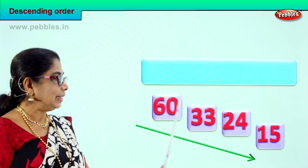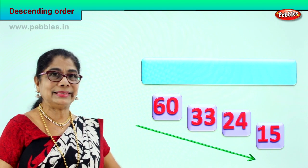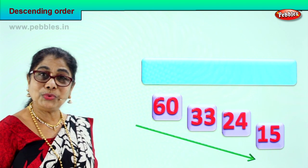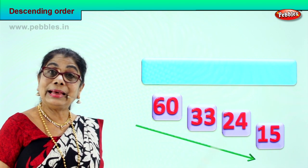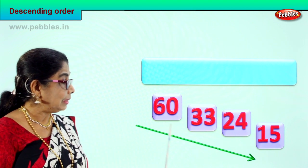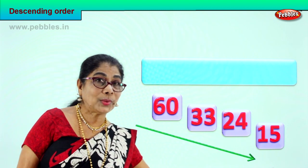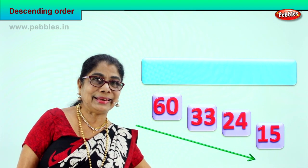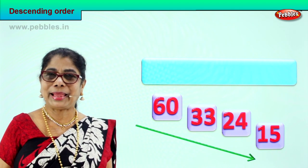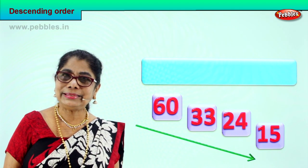Coming down: sixty, thirty, twenty, fifteen. What have you done? You have arranged the numbers — six tens, three tens, two tens, one ten — in a beautiful pattern. Did you enjoy doing this?